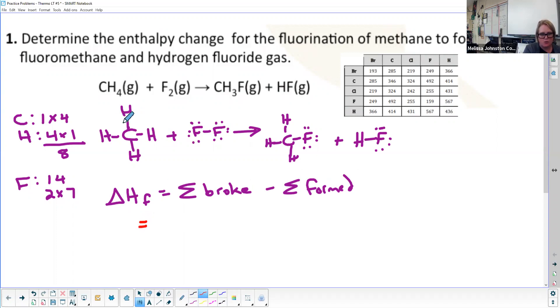I've got one, two, three, four C-H bonds. I go to my table and say C-H is 414, so I've got four times 414, plus I've got one F-F single bond, which is 159. These are all on the reactant side.